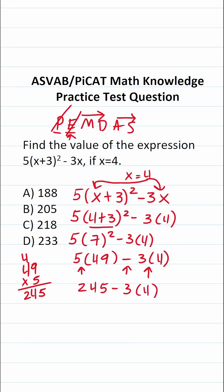What do we have left? We have subtraction and multiplication. You always do your multiplication before your subtraction so let's take care of that. This becomes 245. 3 times 4 is 12. So this is 245 minus 12.